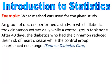This next example — we want to find the method. A group of doctors performed a study in which diabetics took cinnamon extracts daily, while the control group took none. After 40 days, the diabetics who had the cinnamon reduced their risk of heart disease, while the control group experienced no change. This is an experiment where cinnamon was applied as a treatment to part of the group, and we determined whether cinnamon was effective or not.